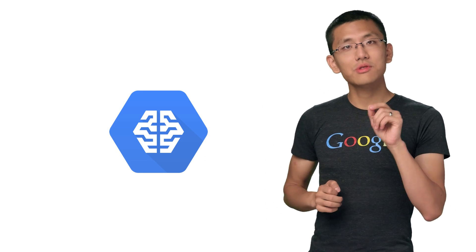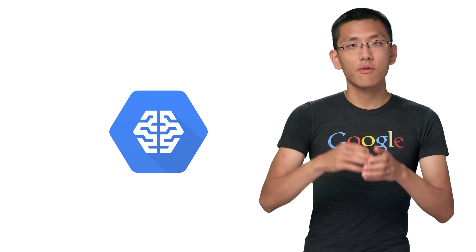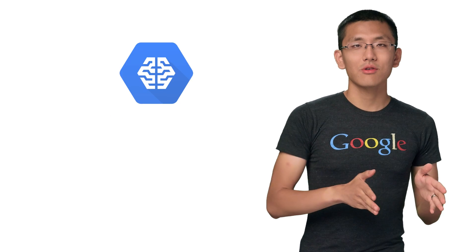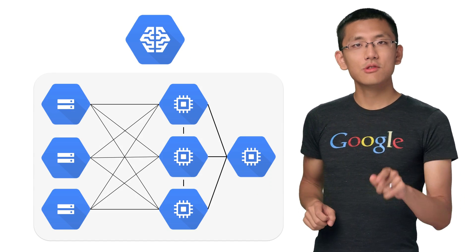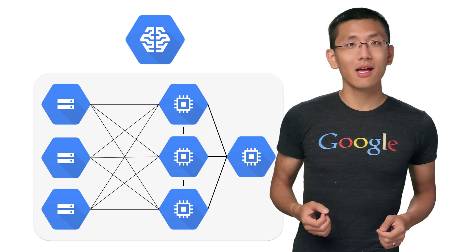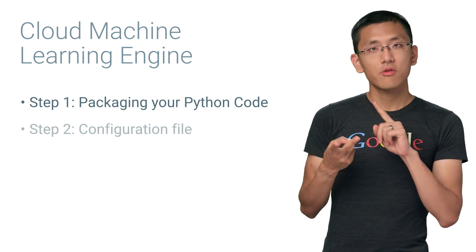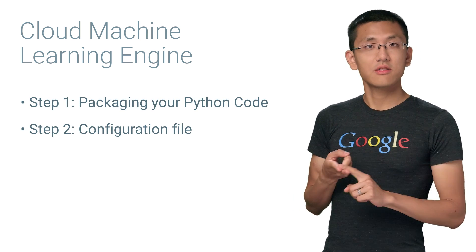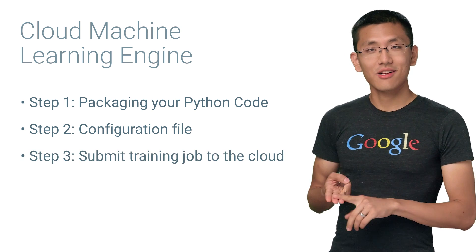So today, we'll use Cloud Machine Learning Engine's training functionality to go from Python code to trained model with no infrastructure work needed. The service automatically acquires and configures resources as needed and shuts them down when it's done training. There are three main steps to using Cloud Machine Learning Engine: packaging your Python code, creating a configuration file that describes the kind of machines you want, and submitting your training job to the cloud.